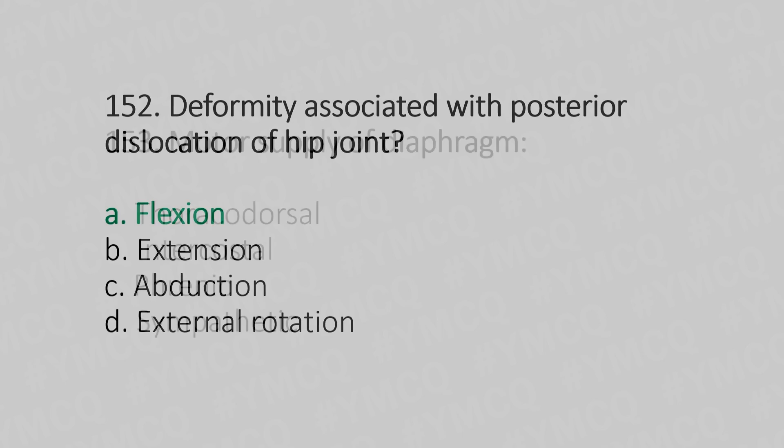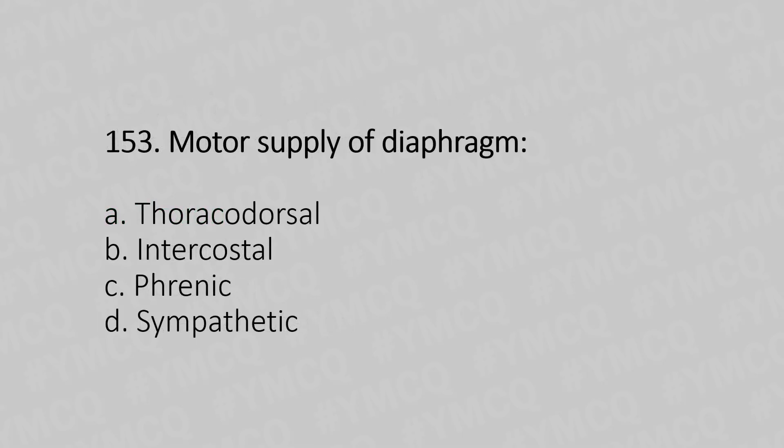Now let's move to question number 153. Motor supply of diaphragm. Option A: thoracodorsal. Option B: intercostal. Option C: phrenic. Option D: sympathetic. And the answer is Option C: phrenic.